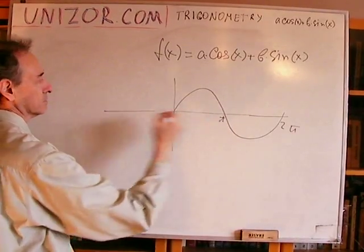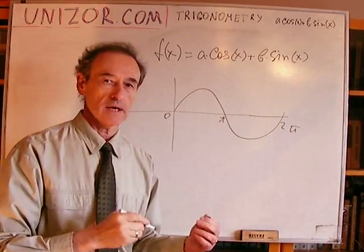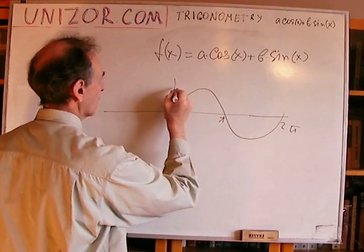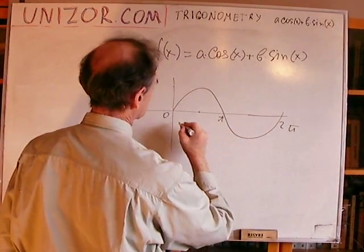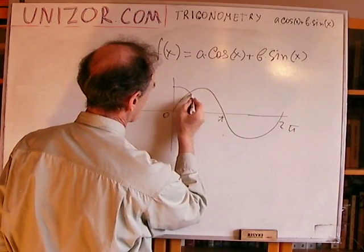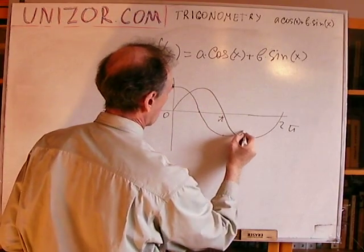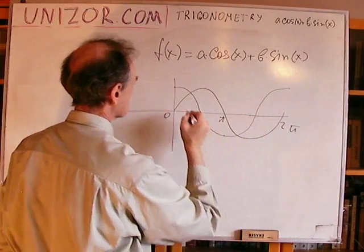Now, the cosine on the same period looks slightly different. Something like this. This is a cosine.